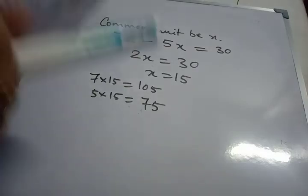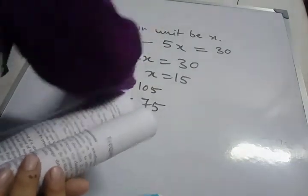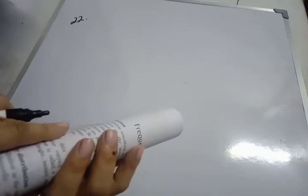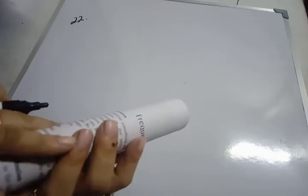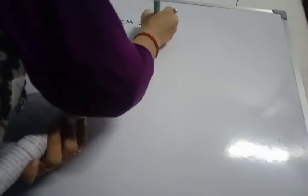Sum number 22. It's given. The ratio of 2 numbers is 5 is to 7. And LCM is 175. Find the numbers.